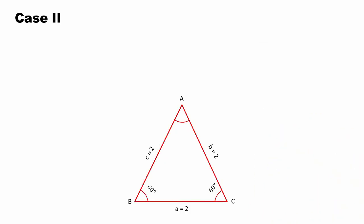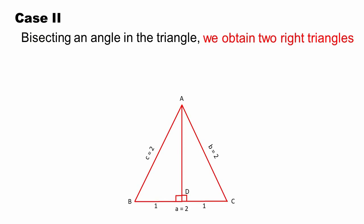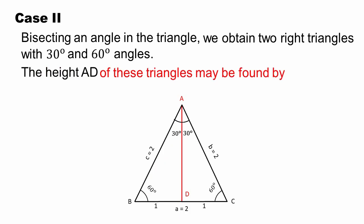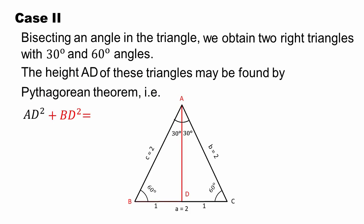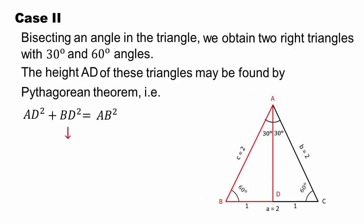If we divide this equilateral triangle into two right angle triangles, we get two right angle triangles. The triangle has an angle equal to 30 degrees. We can divide the triangle into two right angle triangles, given the length of the triangle is 1.